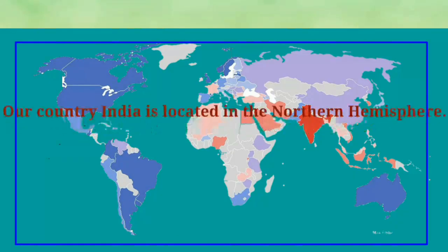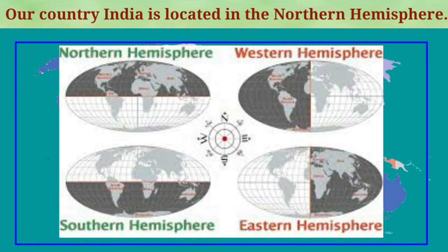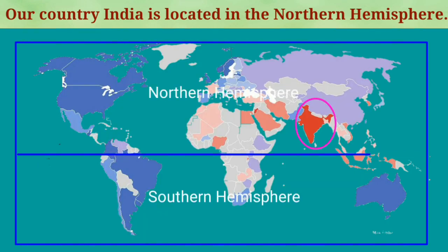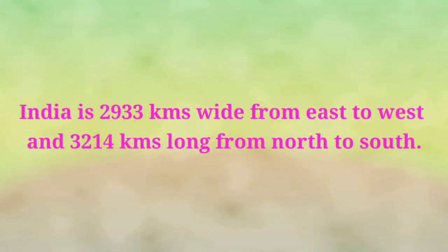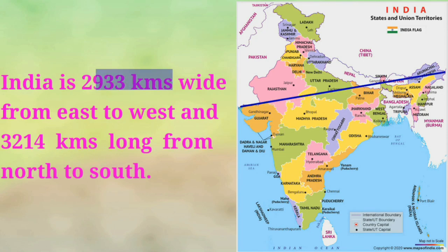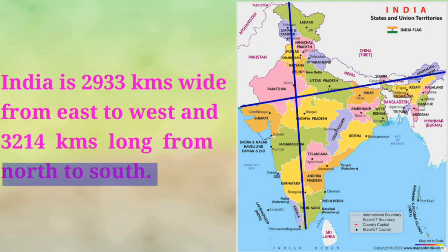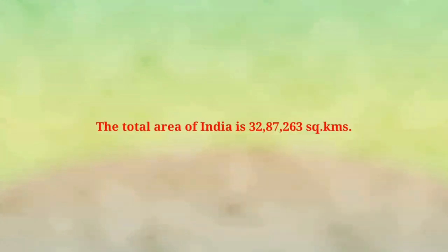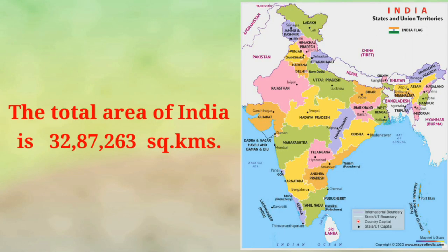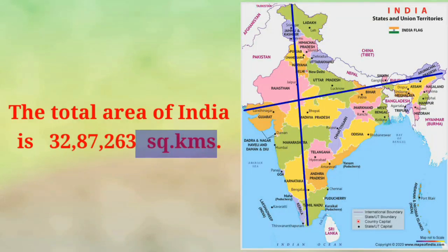Our country India is located in the northern hemisphere. India is 2,933 kilometers wide from east to west and 3,214 kilometers long from north to south. The total area of India is 32,87,263 square kilometers.